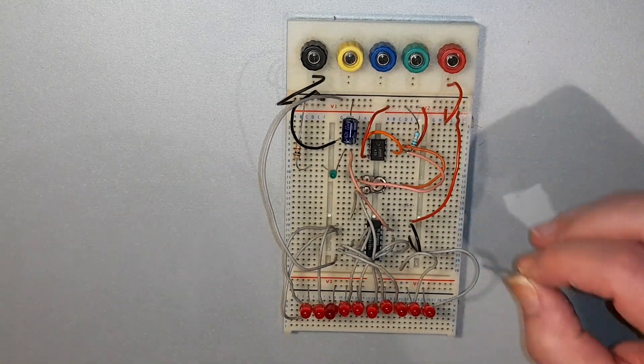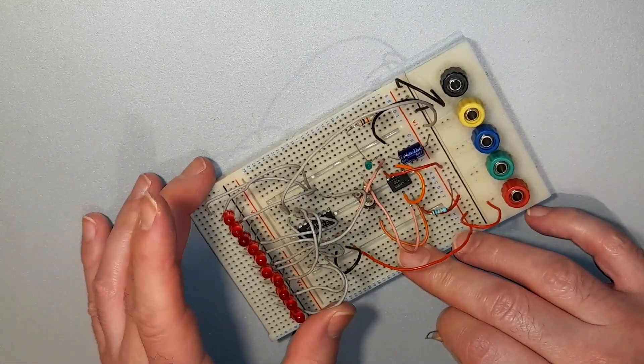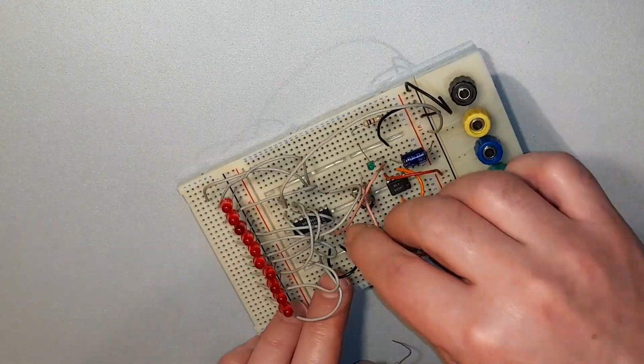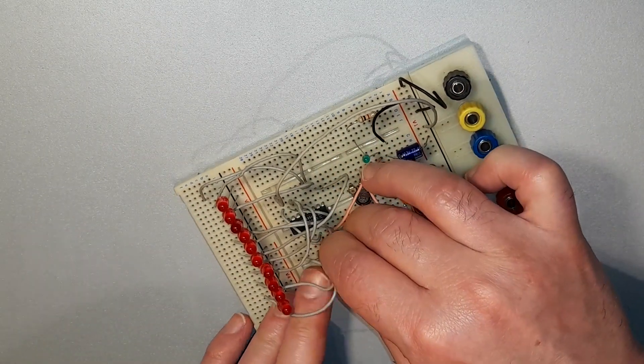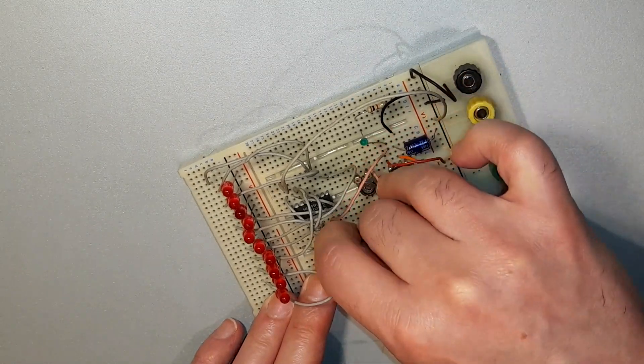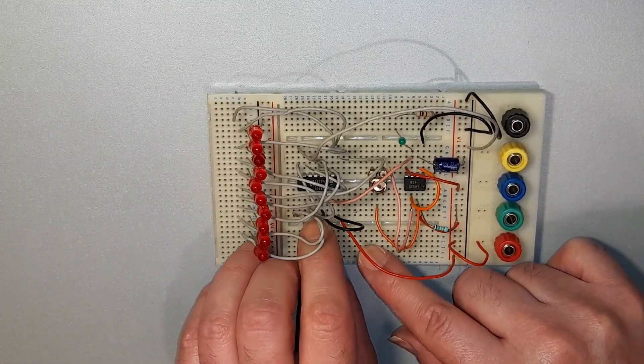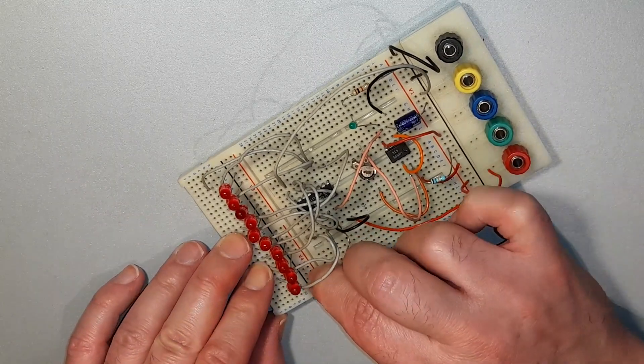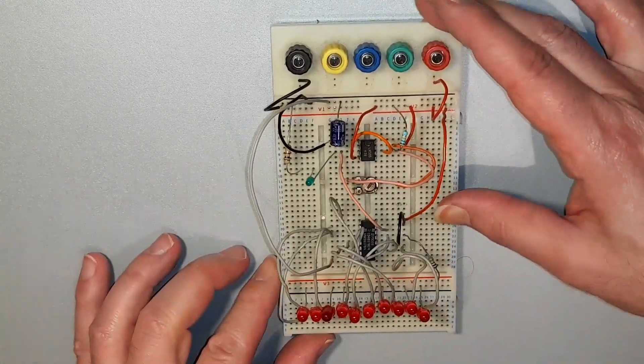Lastly I need a 1 kilo ohm resistor to go from the 10 common cathodes of the LEDs to the negative of the circuit. I figured out where I wanted it to go but I needed to move one of the black wires to an adjacent hole on the same node first.